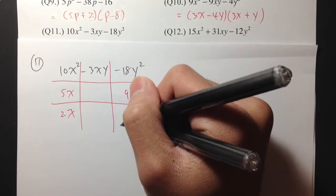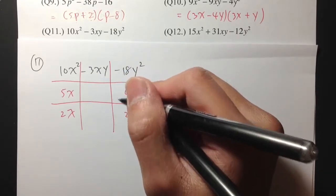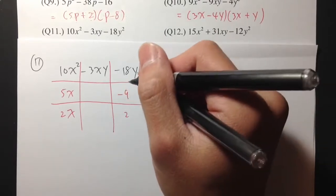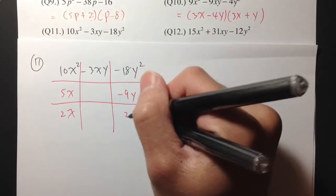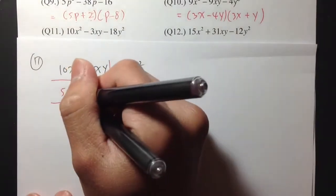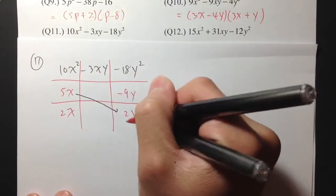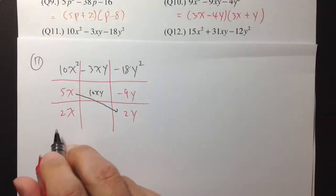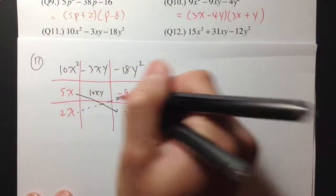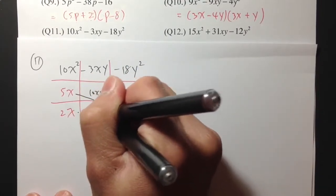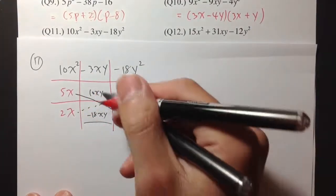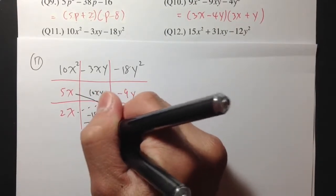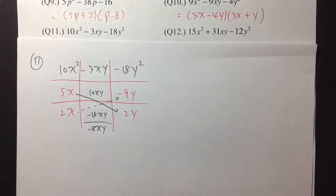Let me put 9 and 2, because I know 9 and 2 will give you 18. And let me make the 9 negative — put negative 9 right here. And I have to have the y squared, so y and y. Take the 5x times 2y — that's 10xy. And 2x times negative 9y is negative 18xy. As we can see, this is not the right combination. The middle turns out to be negative 8xy.